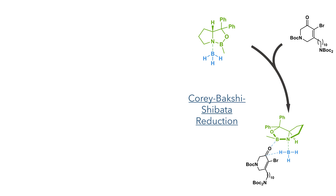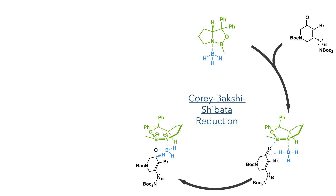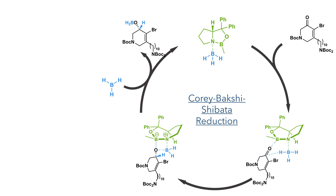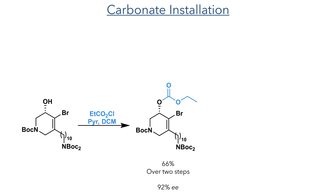This then took part in a CBS reduction. Borane first coordinates to an oxazaborolidine species, which can then coordinate to the carbonyl of the substrate. The steric hindrance of the catalyst means this preferentially happens on one face, with the substrate oriented so the larger groups point away from the catalyst. In this conformation, a hydride from the borane attacks the carbonyl, forming a borate intermediate. Another equivalent of borane can add to this complex, liberating the catalyst. The resulting borane adduct then reacts with methanol to liberate the hydroxylated product. This newly formed hydroxyl group was then reacted with ethyl chloroformate to produce the target carbonate in a 66% yield over two steps with a 92% ee.